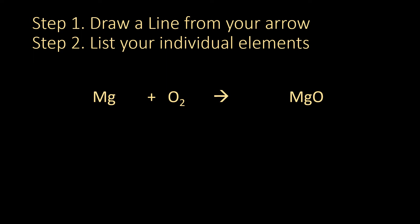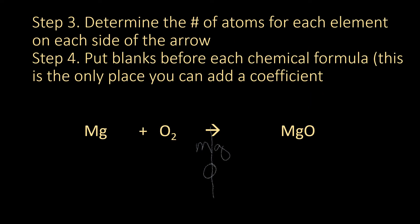Okay, so step one, we're going to draw a line from our arrow, from our yield sign, straight down. We're going to list our elements. So on the left side we have magnesium and oxygen, and on the right side we have magnesium and oxygen. So step three, determine the number of atoms for each element on each side of the arrow. So magnesium would be one times one has one, and oxygen has one times two is two. On the right side, magnesium has one times one and one times zero.